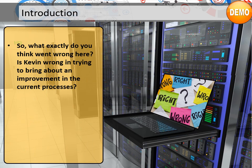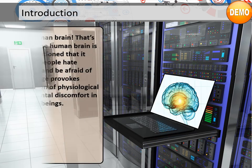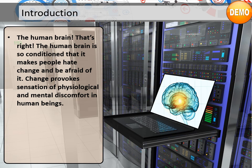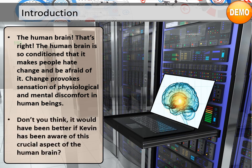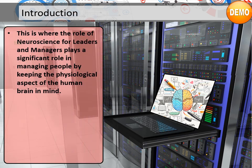So, what exactly went wrong here? Is Kevin wrong in trying to bring about an improvement in the current processes? No, absolutely not — improving a process is the best thing to do for an organization. However, Kevin forgot to keep one crucial aspect in mind: the human brain is so conditioned that it makes people hate change and be afraid of it. Change provokes sensations of physiological and mental discomfort in human beings. It would have been better if Kevin had been aware of this crucial aspect of the human brain. This is where the role of neuroscience for leaders and managers plays a significant role — managing people by keeping the physiological aspect of the human brain in mind.